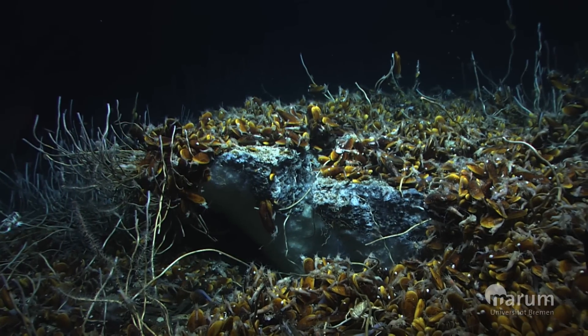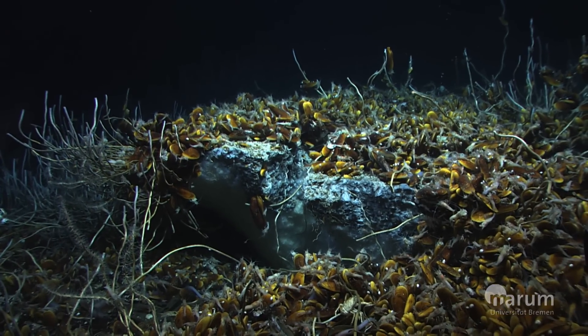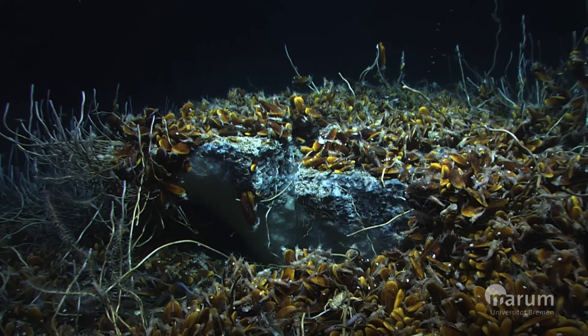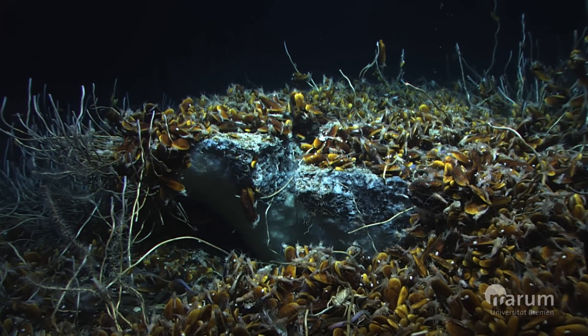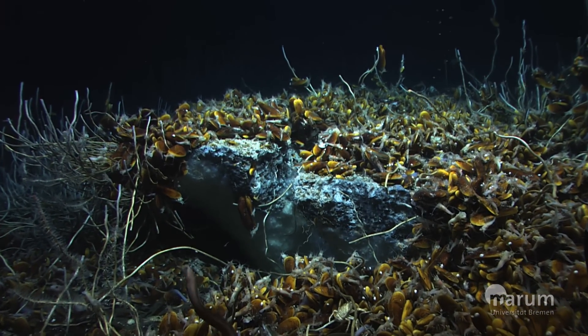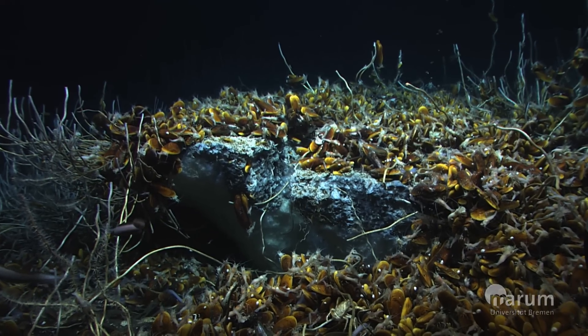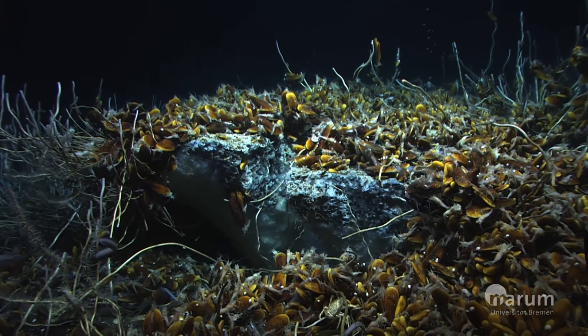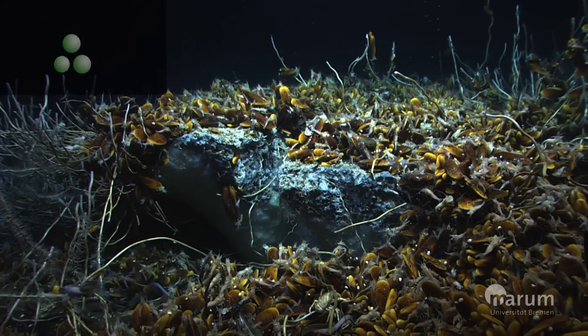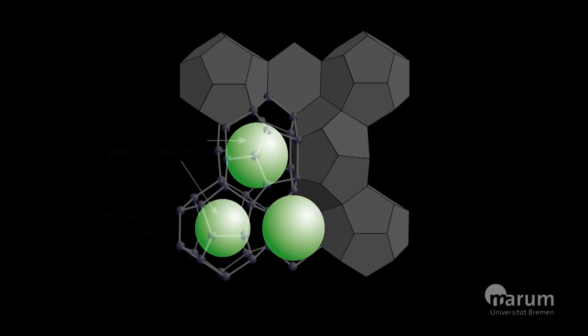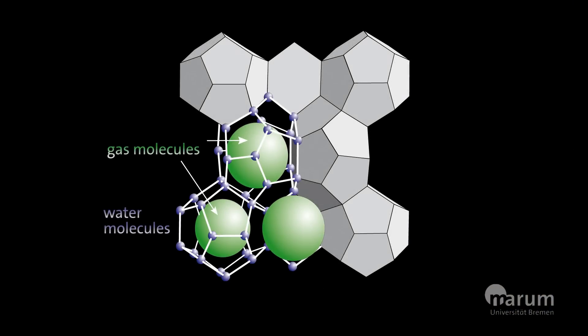A white substance that can be seen at several places on the seabed provides a clue. This material is called methane hydrate. Under certain pressure and temperature conditions, gas molecules such as methane can crystallize with water molecules to an ice-like structure, so-called methane hydrates.